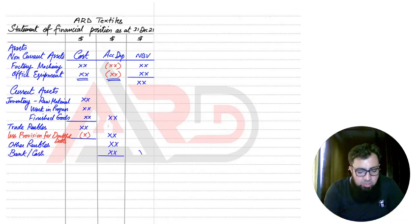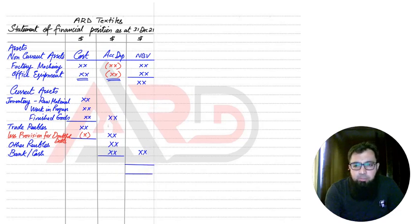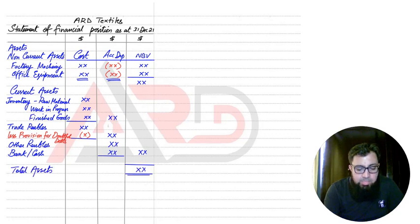Then we have bank or cash balances. If we add all of these values, we get total current assets. Adding both non-current assets and current assets together gives us the figure for total assets.